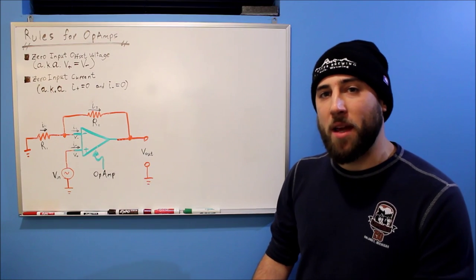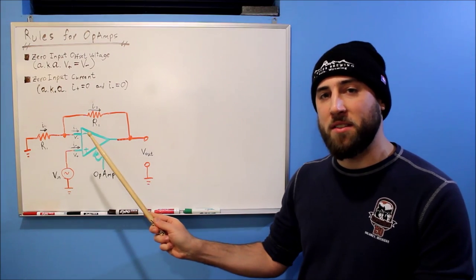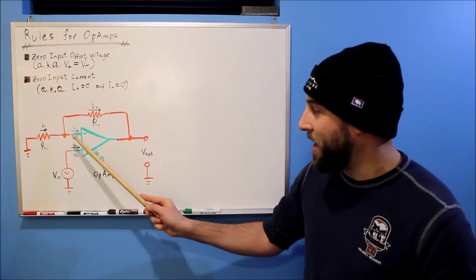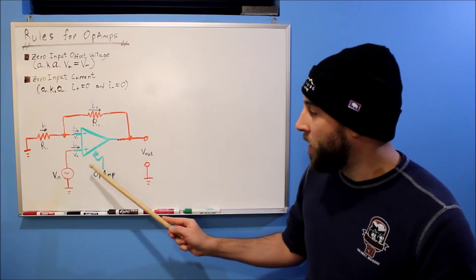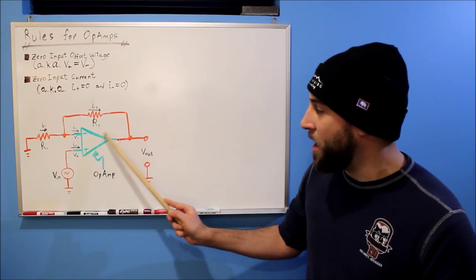Spoon is here to tell you all about op amps. Now what's an op amp? Why this is an op amp. It has an inverting input, a non-inverting input, and an output.